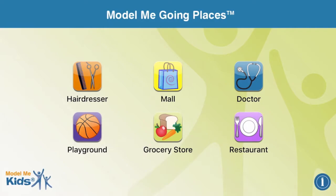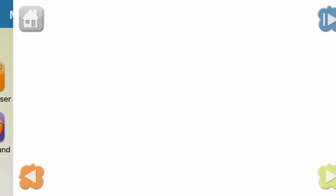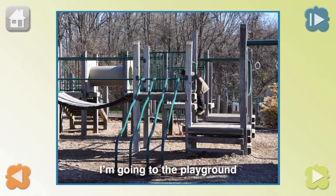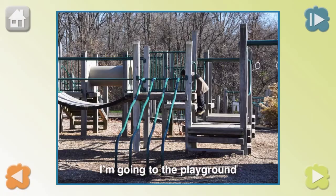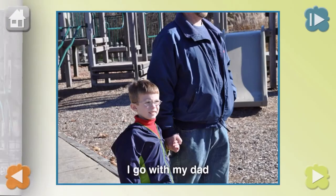For instance, if we wanted to manually show playground expectations, we would click the playground button. It jumps into a slideshow of real-life photos with captions in the order that things happen when going onto the playground. If you wish to go back a page, you can click the orange back button in the lower left corner. Once you reach the end, you can restart it by pressing the purple restart button that appears in the lower right corner.